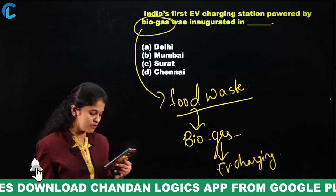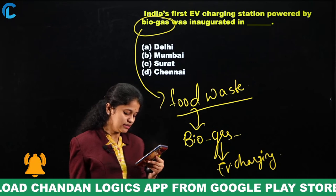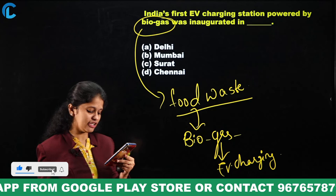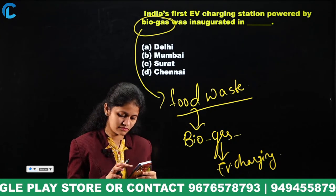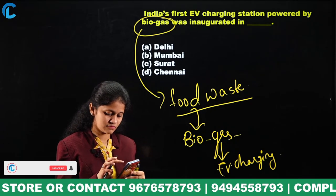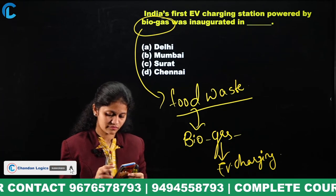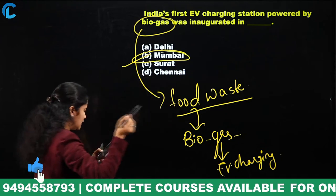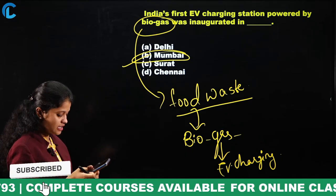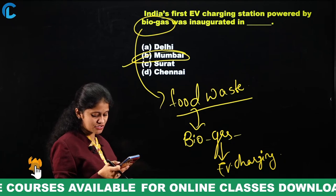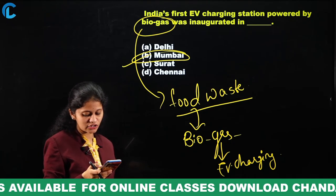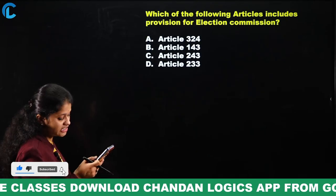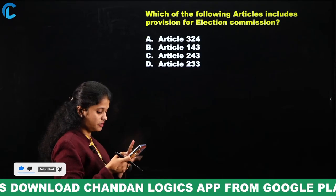Many viewers answered option B — Mumbai. That is the correct answer. India's first EV charging station powered by biogas was inaugurated in Mumbai, Maharashtra. It is expected to generate 220 units of electricity from approximately 1.5 lakh kilograms of wastage. Well done everyone — maintain the same consistency in answering.